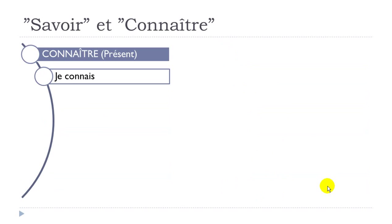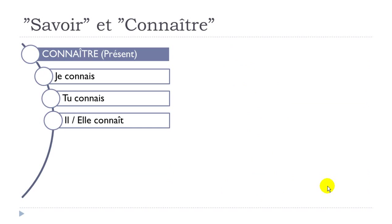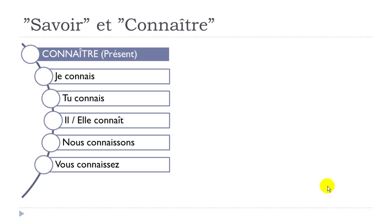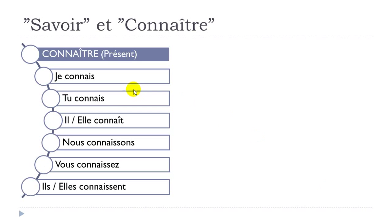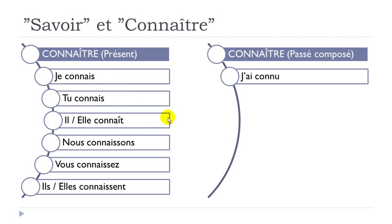Now let's see Connaître at the present tense: je connais, tu connais, il connaît, elle connaît, nous connaissons, vous connaissez, ils connaissent, elles connaissent. Don't forget the circumflex on 'il connaît' — even if you don't pronounce it differently, you should write it. The first three singular forms are all pronounced the same: 'connaît.'